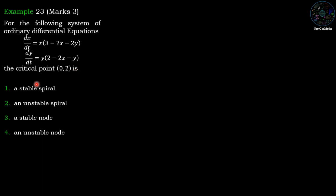The critical point is (0, 2). We have four options: a stable spiral, an unstable spiral, a stable node, and an unstable node. This is one of the most important examples for ordinary differential equations — a problem about the characteristics of critical points.